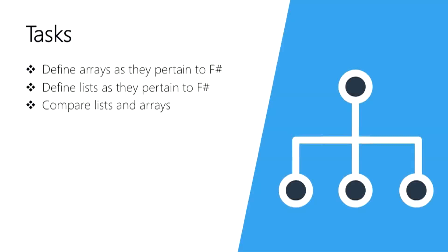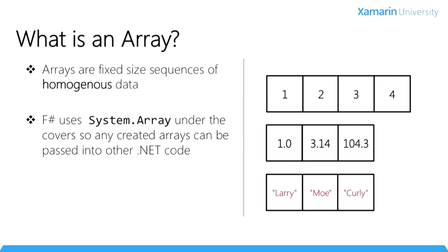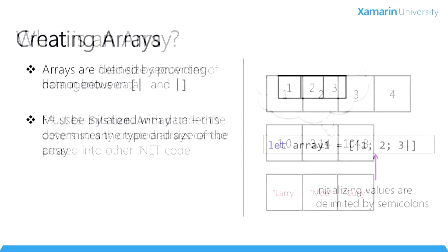An array is a fixed size, zero-based, contiguous, mutable sequence of items which are all of the same type. When you create an array in F-Sharp, the compiler will generate a System.Array, and all the features of System.Array are available. You can even use the array class in your code just as you would in C-Sharp, or pass these arrays into C-Sharp code for processing. Like C-Sharp, the data must be homogenous — it's strictly typed and verified at runtime.